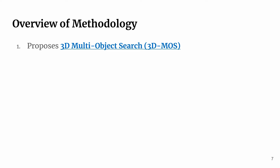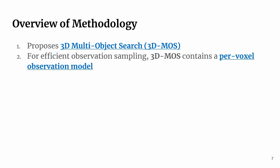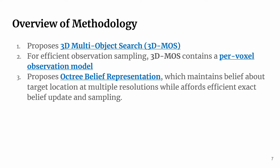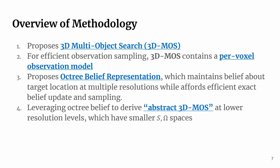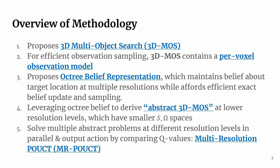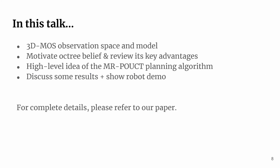Here is an overview of our methodology. First, we propose 3D multi-object search (3DMOS), which is an object-oriented POMDP to model the problem of interest. For efficient observation sampling, 3DMOS contains a per-voxel observation model. We then propose AugTree belief representation, which maintains belief about target location at multiple resolution levels, while affording efficient exact belief update and sampling. Leveraging the structure of AugTree belief, we derive abstractions of the 3DMOS problem at lower resolution levels, resulting in smaller POMDPs. We plan to solve multiple abstract problems at different resolution levels in parallel and output the action by comparing Q values using Po-UCT. We call this algorithm multi-resolution Po-UCT. In this talk, we will cover the observation space model of 3DMOS, motivate AugTree belief and review its key advantages, go over the high-level idea of the multi-resolution Po-UCT planning algorithm, and discuss results and show a robot demo.